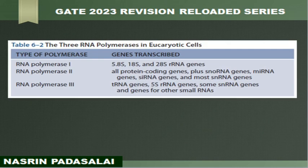Next we are going to study 3 RNA polymerases in eukaryotic cells. The RNA polymerases in eukaryotic cells are classified into 3 types: RNA pol 1, RNA pol 2, and RNA pol 3. First, RNA pol 1: the genes transcribed by RNA pol 1 include the 5.8S ribosomal RNA gene, 18S ribosomal RNA gene, and 28S rRNA gene. So these 3 genes are transcribed by RNA pol 1.